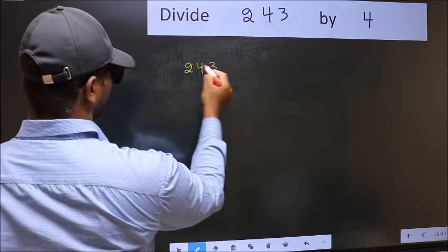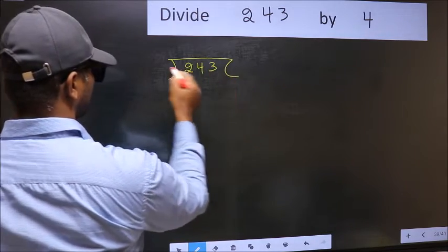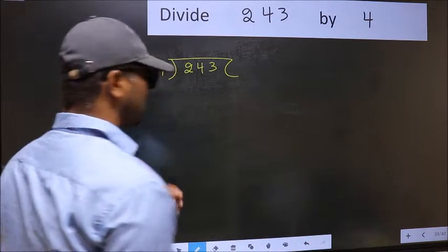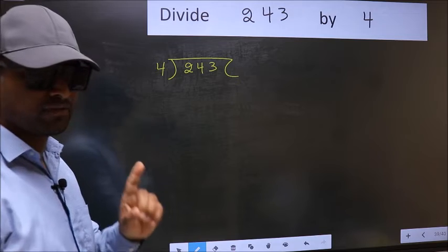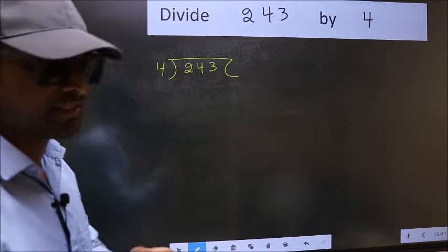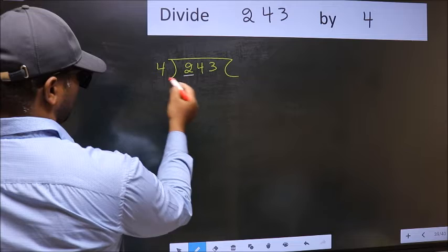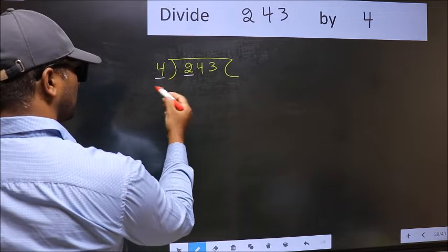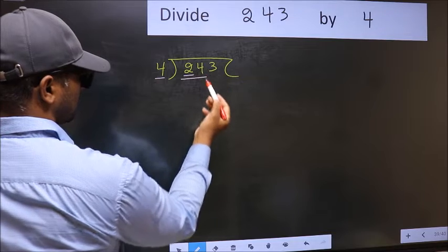243 and 4 here. This is your step 1. Next, here we have 2 and here 4. 2 is smaller than 4. So we should take 2 numbers, 24.